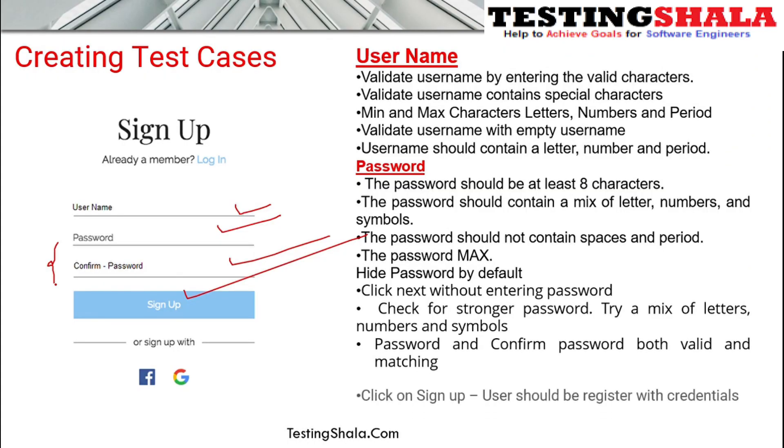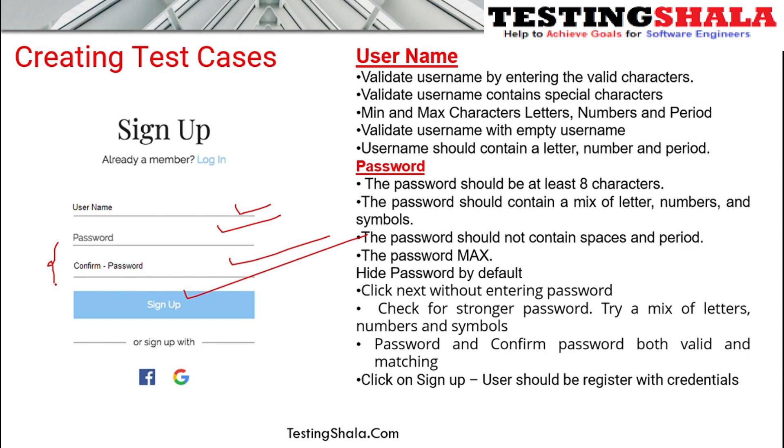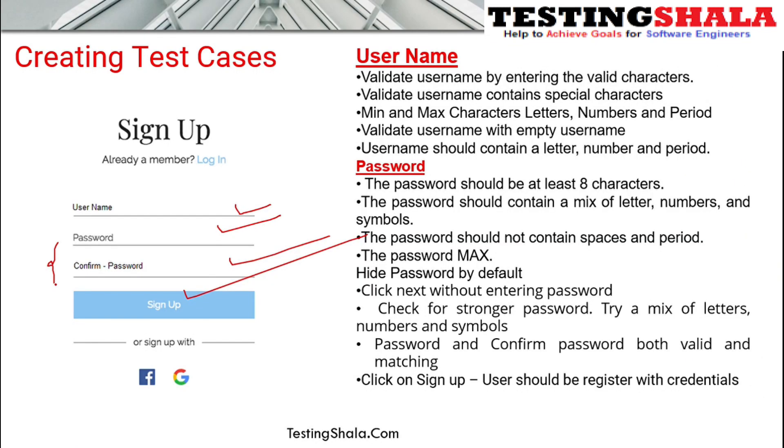Clarify requirements with your product owner or development team to ensure you are aligned while writing test cases. After testing all these combinations and clicking the sign-up button, the new user account should be created. You should also validate in the back end that the user was actually created, because the next user story will use that username and password to log in.